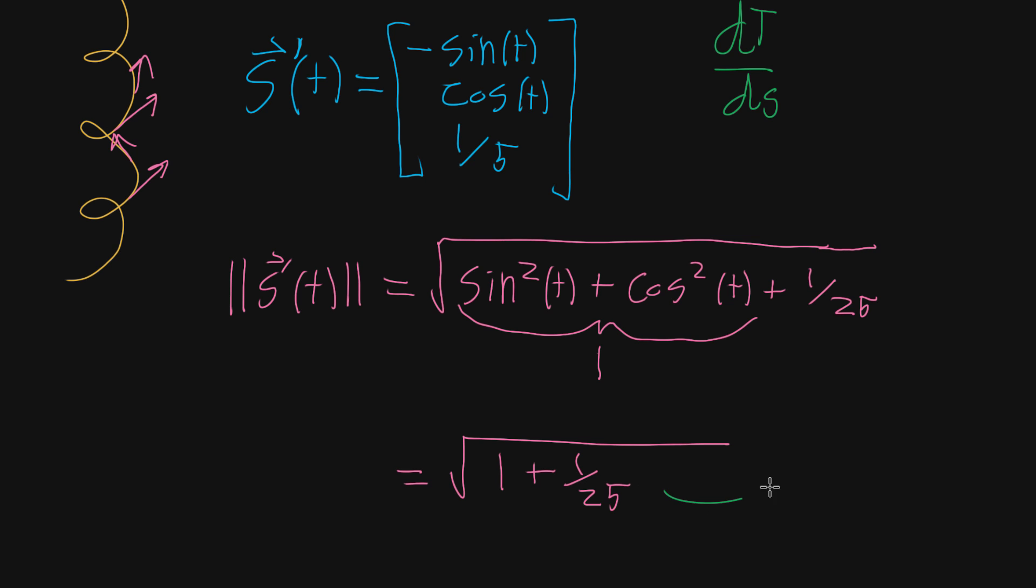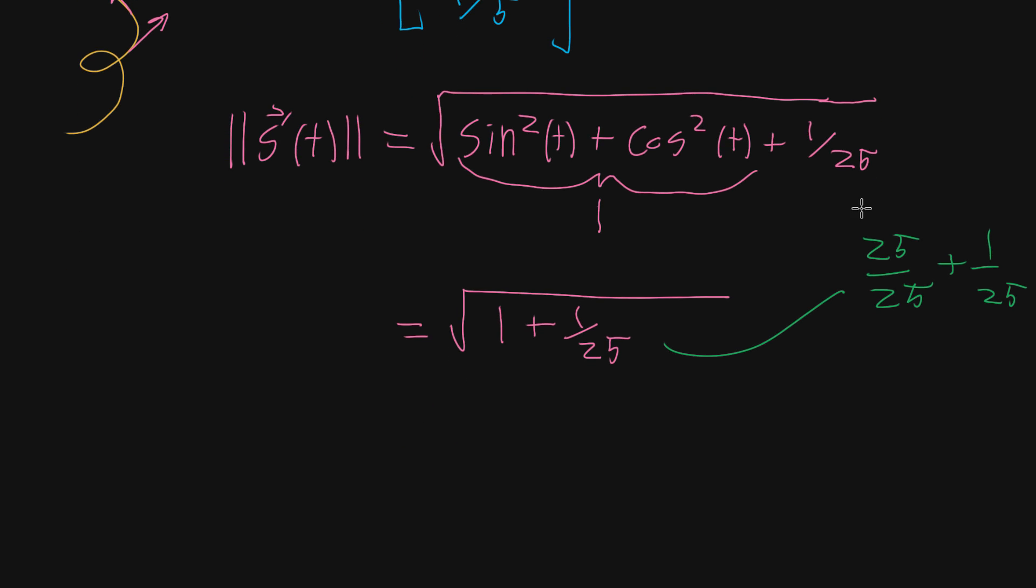That's 25 over 25 plus one over 25, which equals the square root of 26 divided by 25. Since 25 is already a square, I'll write this as the square root of 26 divided by 5. So this whole thing is the magnitude of our derivative.